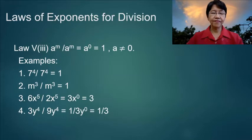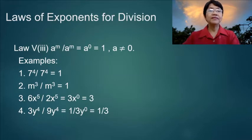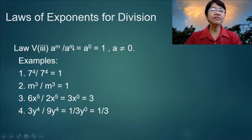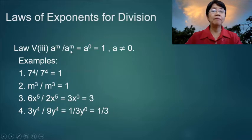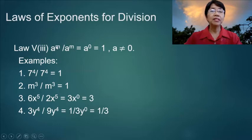Law 5 part 3: when you have the same base and the same powers, a to the m over a to the m is equal to a to the 0, because you subtract the powers — m minus m — and that is equal to 1.